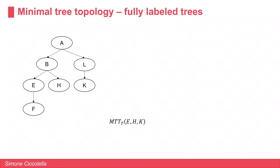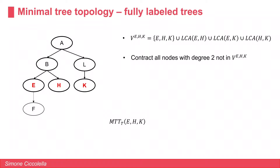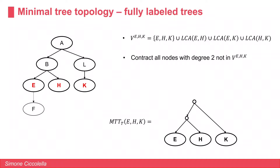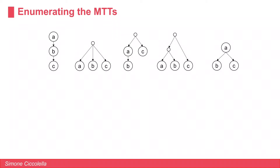To apply the triplet-based measure on fully labeled trees, we first introduce the main structure: the minimal tree topology. It is defined for a triple of labels. For example, to find the minimal tree topology for the triplet (e, h, k), we construct a subtree composed of the three labels and the lowest common ancestor of each pair, then contract all nodes with degree 2 not in this set. The minimal tree topology for (e, h, k) is the one shown here.